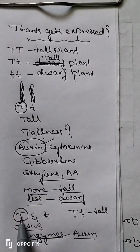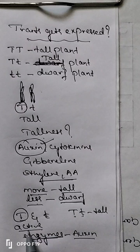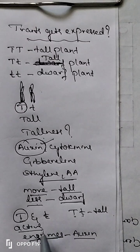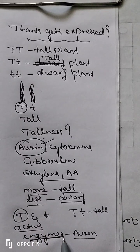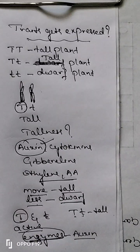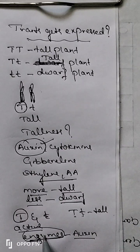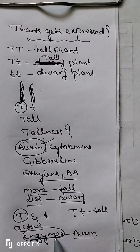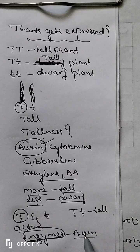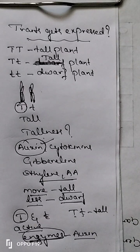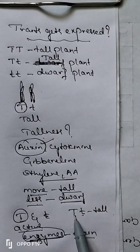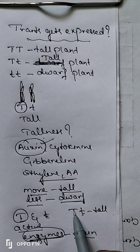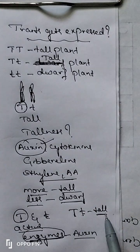Among capital T and small t, capital T is more active. Since it is more active, it gives the information to produce more and more enzymes. Why do we need enzymes? We need enzymes for the production of axine. Axine is the hormone responsible for the growth of the plant. If axine is secreted more, the plant grows as a tall plant. If axine is secreted less, the plant grows as a dwarf plant.